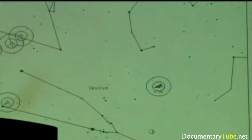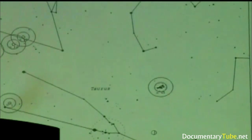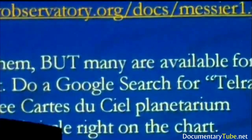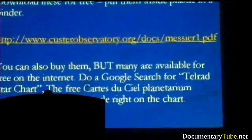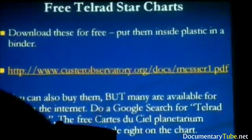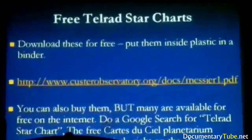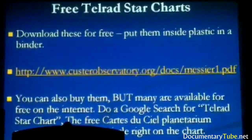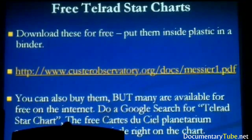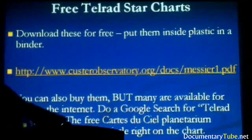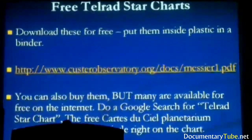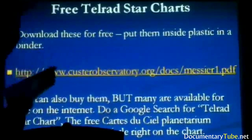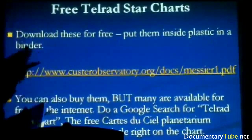You can download star charts with telrad circles already printed for free. Put them inside a plastic sleeve — because at night, dew and rain will soak and ruin loose paper. You'll also find you never realized how dewy it gets at night until you start doing astronomy. If you print something at home, put it inside a plastic sleeve. You can also photocopy pages from the atlas, use those outside in pristine condition while keeping the original book safe inside.